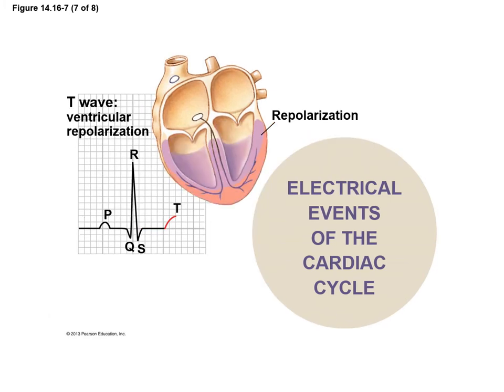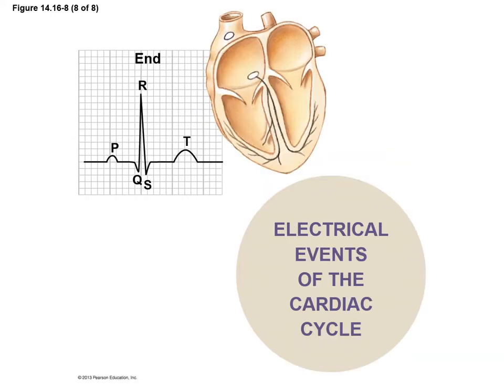Finally, we enter the T wave where repolarization is happening. Depolarization occurs from apex towards base, while repolarization occurs from base towards apex — so the heart is relaxing in the opposite direction that it depolarized. With that, we have finished the electrical events of the cardiac cycle. Once the T wave is done, the heart is repolarized and relaxed. A P wave, QRS complex, and T wave all together represents one total heartbeat, one total heart cycle. Every time you see a cluster of these, it represents one heartbeat, and we can count them out.